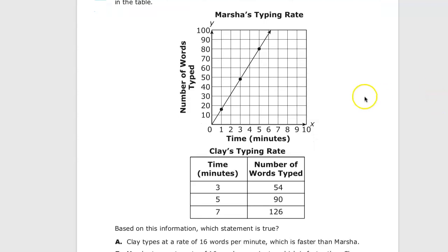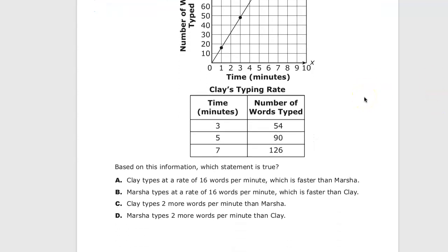So what's the question itself? Based on this information, which statement is true? A: Clay types 16 words a minute faster than Marsha. B: Marsha types 16 words per minute which is faster than Clay. C: Clay types two words per minute more than Marsha. D: Marsha types two more words per minute than Clay.